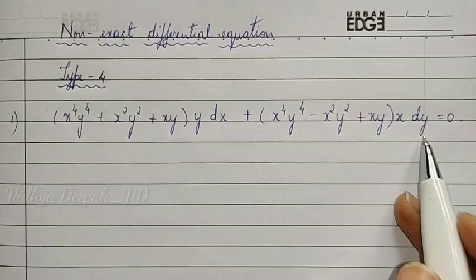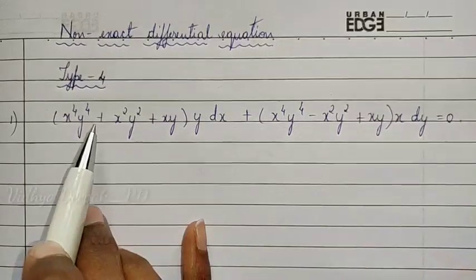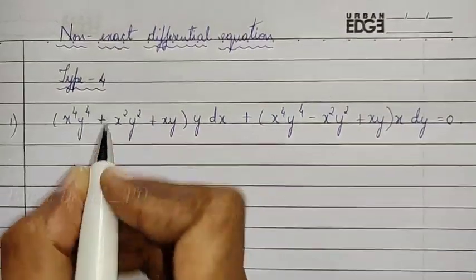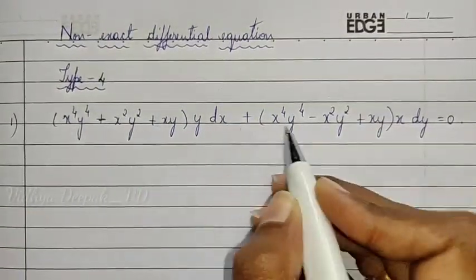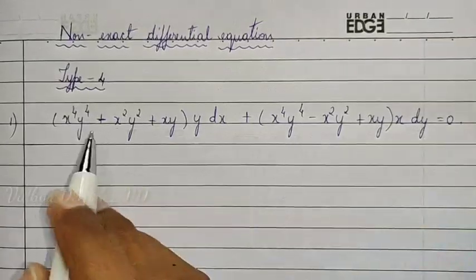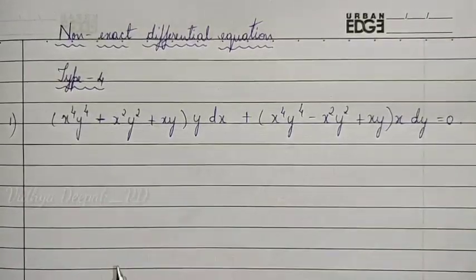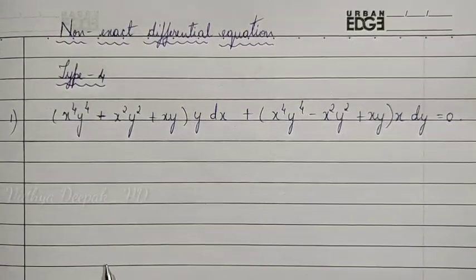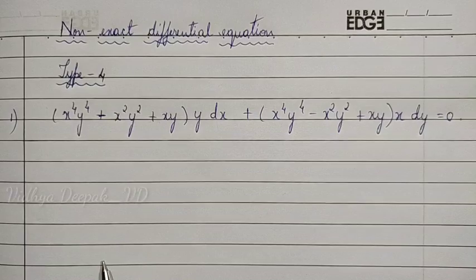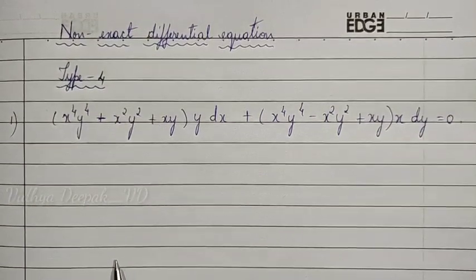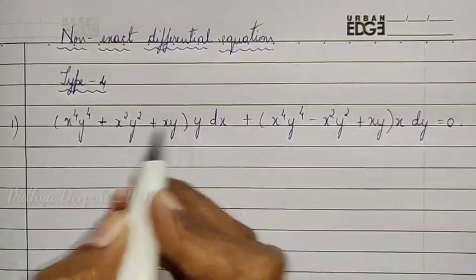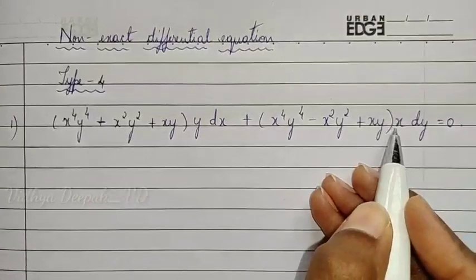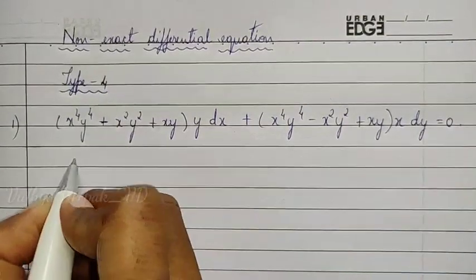Here you can see this is of type 4. How will you identify this is type 4? Something into y dx, something into x dy. If it is in this form, you can confirm that it is a type 4 non-exact differential equation. So here we have to multiply x inside.